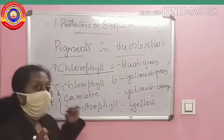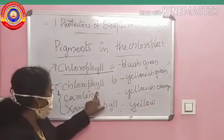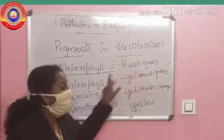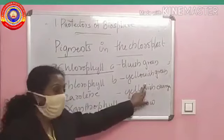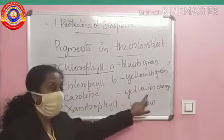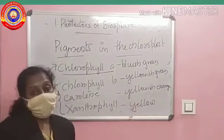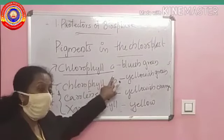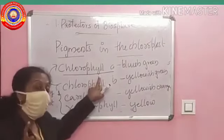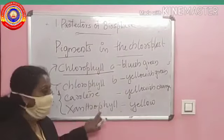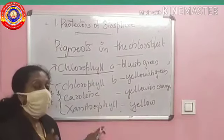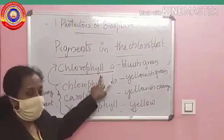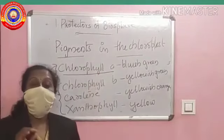The pigments are chlorophyll A, chlorophyll B, carotene, and xanthophyll. Chlorophyll A imparts bluish green, chlorophyll B imparts yellowish green, carotene imparts yellowish orange, and xanthophyll imparts yellow in colour. All these have the capacity to absorb sunlight. The peculiarity of chlorophyll A is that it directly participates in photosynthesis. The rest — chlorophyll B, carotene, and xanthophyll — absorb the sunlight and transfer it to chlorophyll A for photosynthesis. So these three pigments are called the accessory pigments.